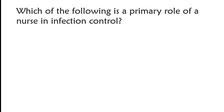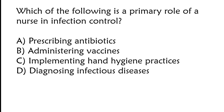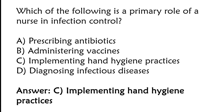Which of the following is a primary role of a nurse in infection control? Options: prescribing antibiotics, administering vaccines, implementing hand hygiene practices, or diagnosing infectious disease. The correct answer is option C: implementing hand hygiene practices.